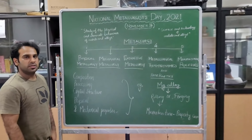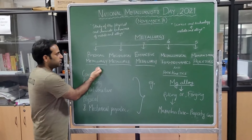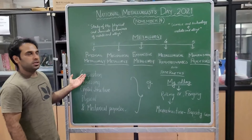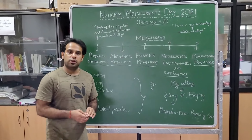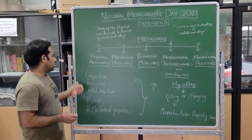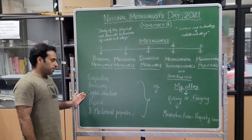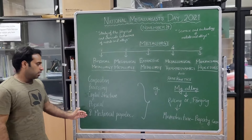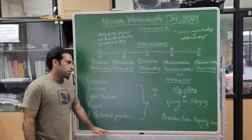Now we will discuss mainly what is physical metallurgy. Physical metallurgy is basically a branch of metallurgy where we mainly focus on the composition, processing, crystal structure, physical properties of the material, along with the mechanical properties of the material.